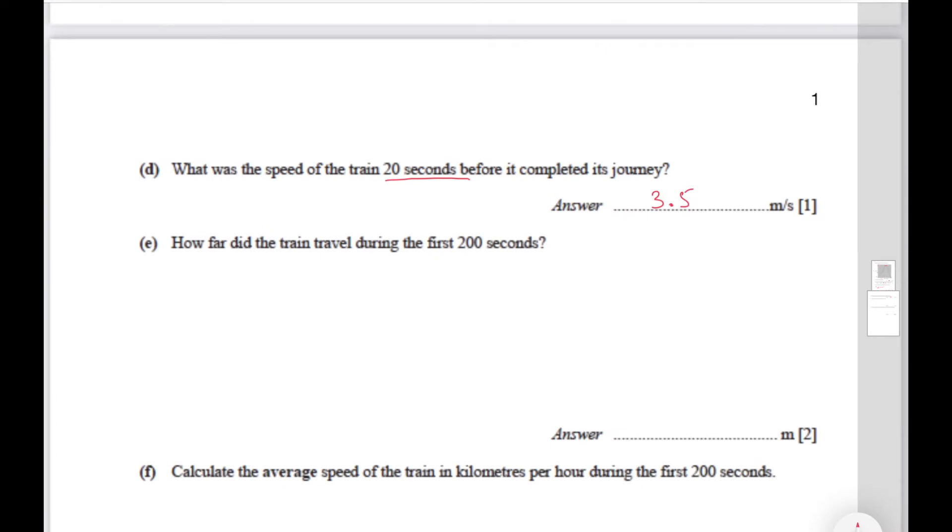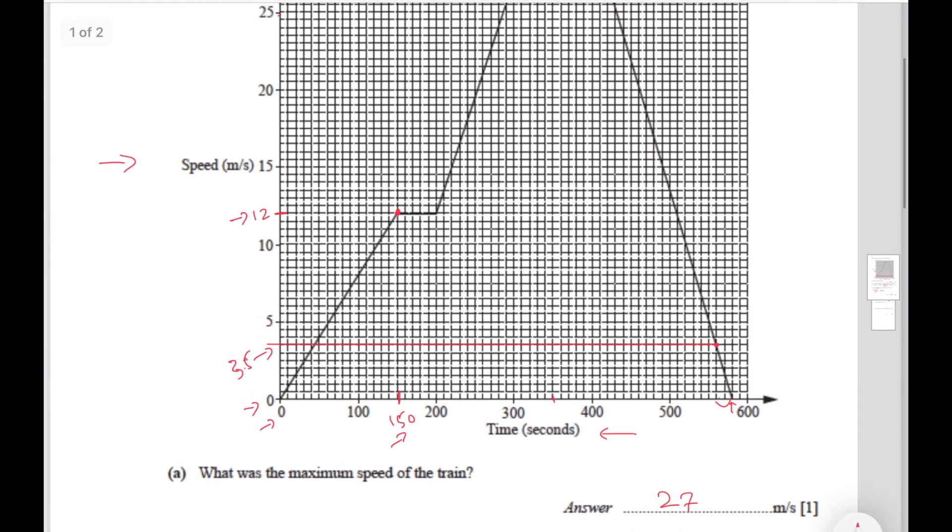The next part says how far did the train travel during the first 200 seconds. That means they have to calculate the distance the train traveled over here at this point. That means we have to find the area under this curve.